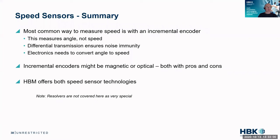In summary, the most common way is to use an incremental encoder. It measures angle, not speed, uses differential transmission, and can be magnetic or optical — each with its own pros and cons. We offer both.